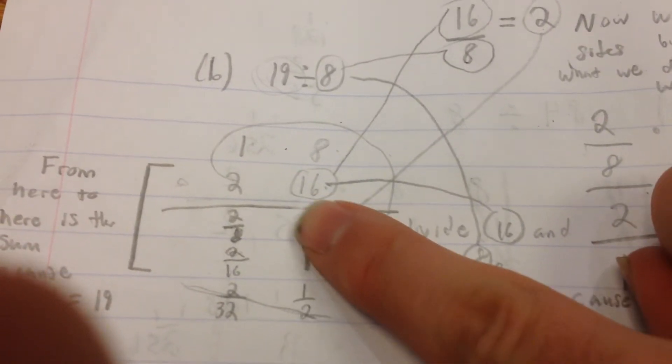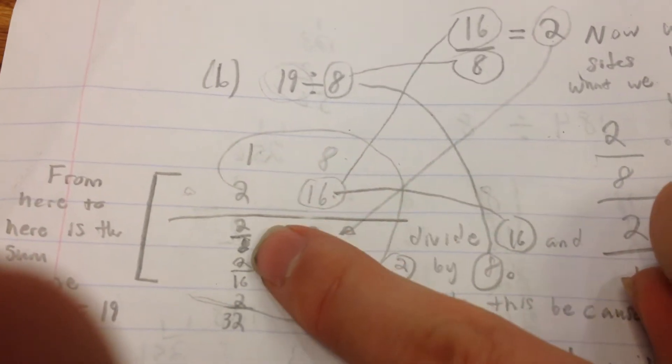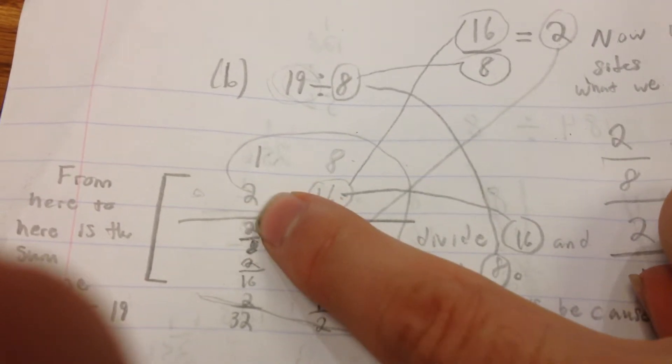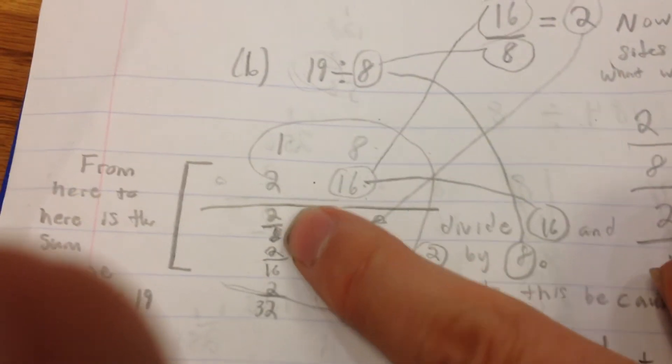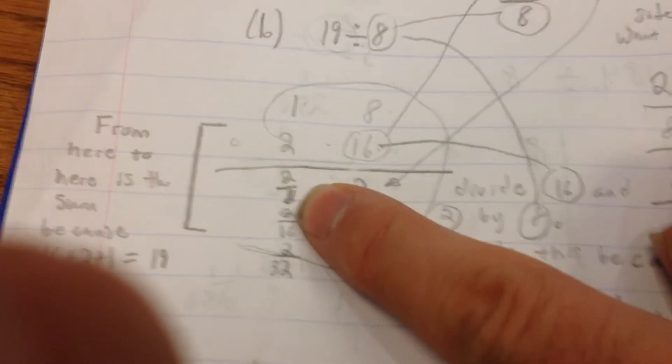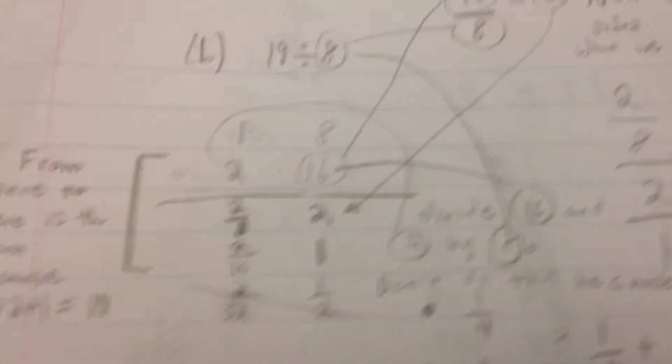It goes down to 2, and then for this one, we divide. What we do to one side, we do to the other side. So 2 divided by 8, and then we halve it, and we keep halving it.